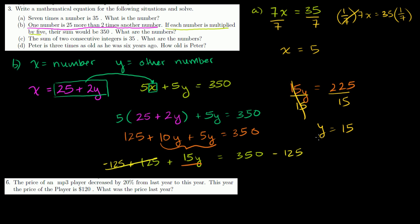Now, we're not completely done yet. We know what y is, but we still have to solve for x. So x is equal to 25 plus 2 times y. y is equal to 15. 2 times 15, that is equal to 30. 25 plus 30 is 55.